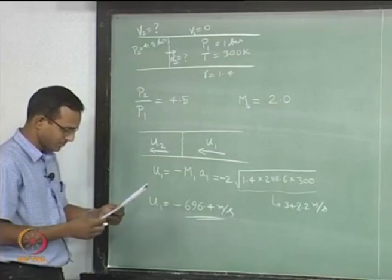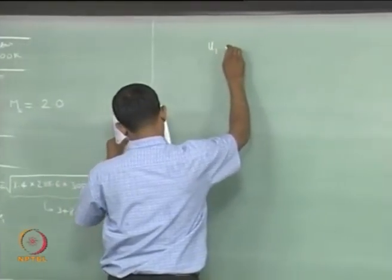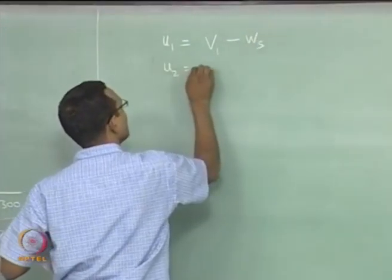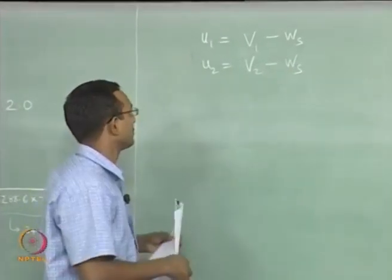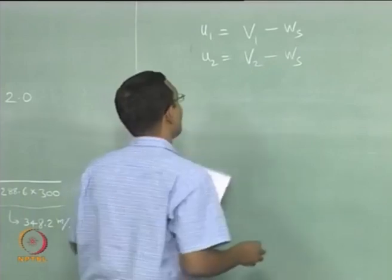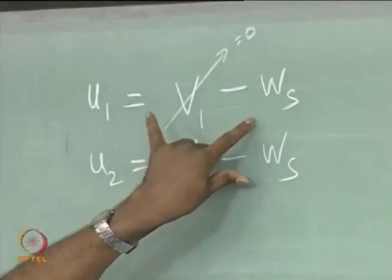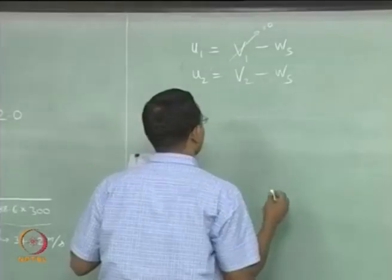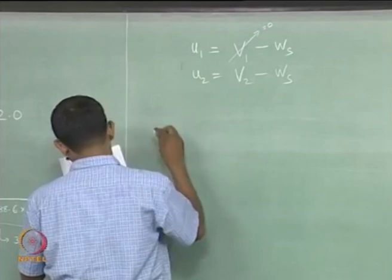We have solved up to this point. Now we write the coordinate transformation equations: U1 = V1 − WS and U2 = V2 − WS. These are the expressions used always in solving moving shock problems — very easy to solve this way. In our case V1 = 0, and this information has already been used to find U1.